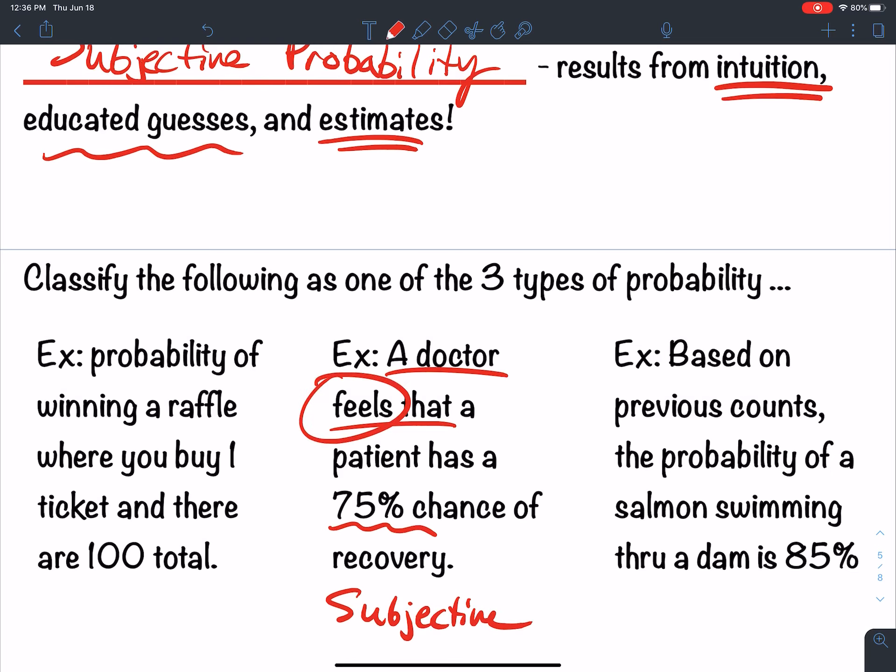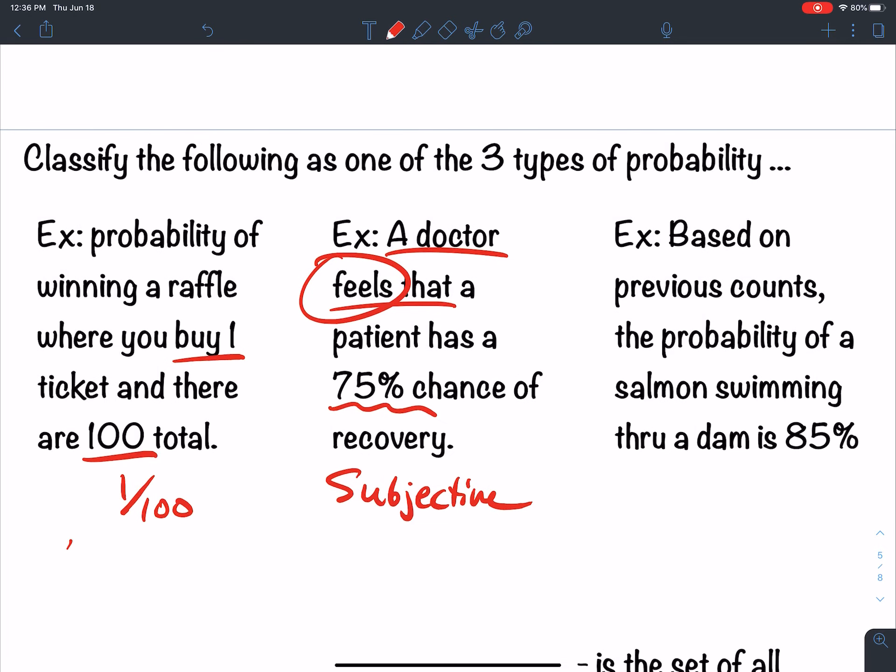Now, the probability of winning a raffle where you buy one ticket and there are 100 tickets total. So maybe you play in bingo or whatever, and when you walk in the door, they give you some tickets. And at the end of the night, they draw from this big old ticket raffle thing and they pull out your number. The probability that you get drawn is like one out of 100 because you have one ticket out of 100. Every ticket has an equal chance of being picked, hopefully, in your raffle. So this would be an example of classical. Classical probability, each ticket has the same chance of happening.